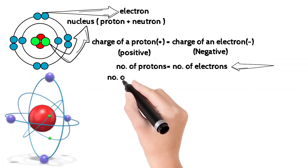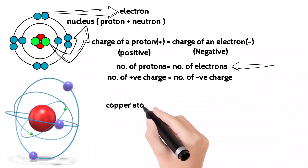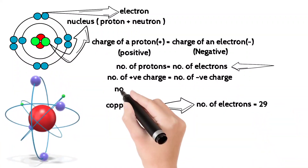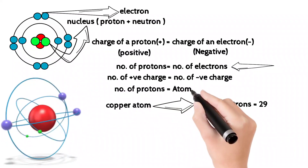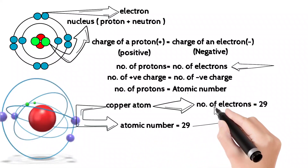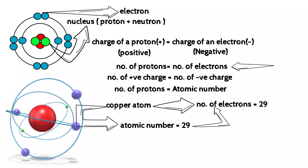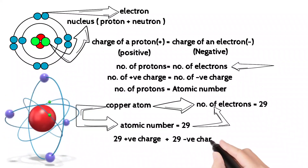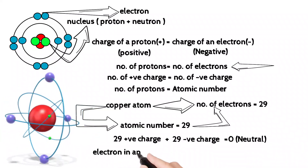In a copper atom, there are 29 electrons and 29 protons — that is the atomic number of copper, which is 29. So 29 protons give a positive charge and 29 electrons give a negative charge, meaning the net charge is zero — in other words, the atom is neutral.